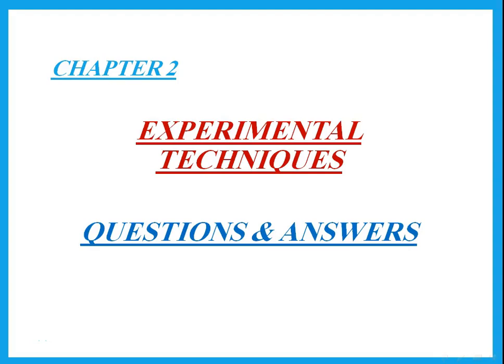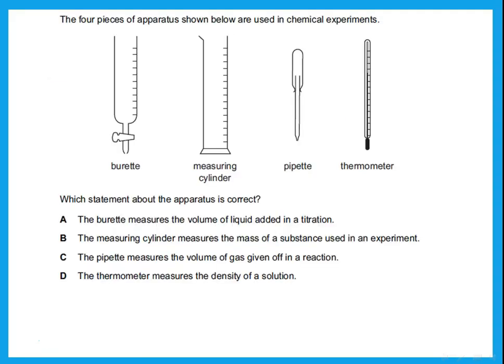This is the questions and answers for Chapter 2. The question shows four pieces of apparatus used in chemical experiments: burette, measuring cylinder, pipette, and thermometer. The first option states the burette measures the volume of liquid added in a titration. This statement is correct — titration is an experiment in which you use a burette to add volumes of liquid.